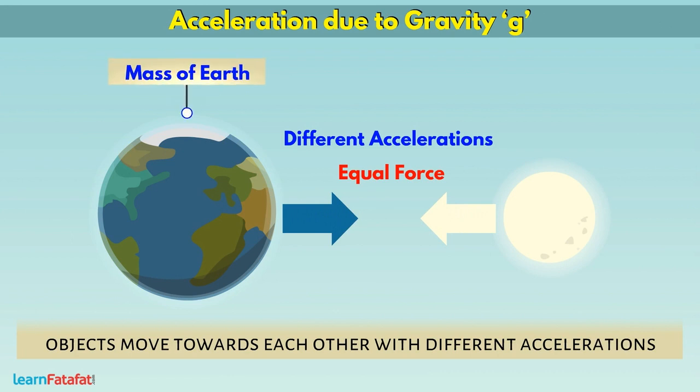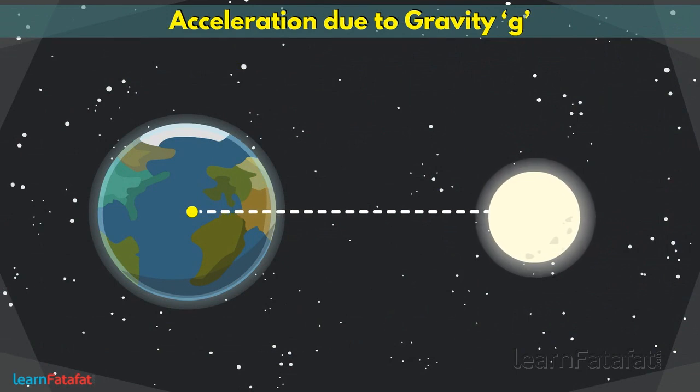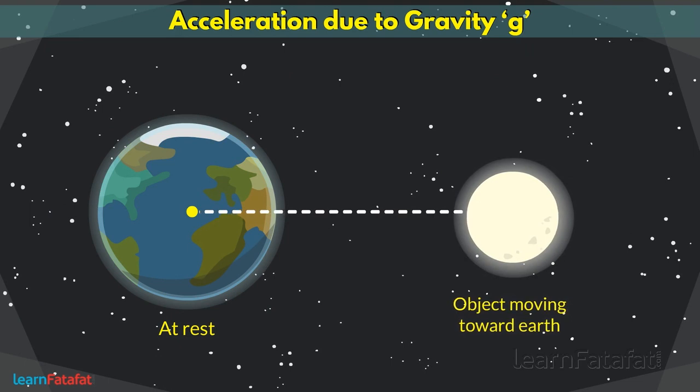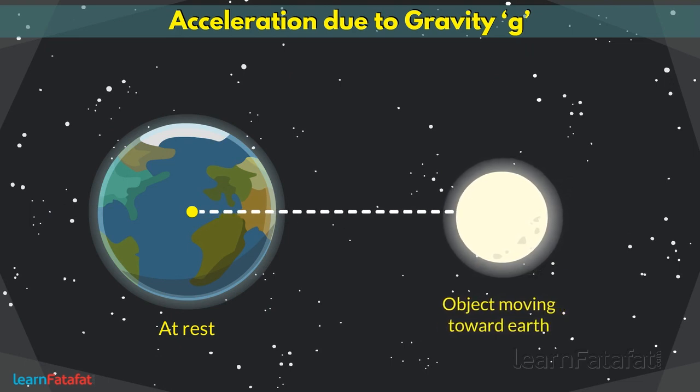Since the mass of Earth is very large, the gravitational force results in negligible acceleration in it. Thus, it appears that the Earth is at rest and the object is moving towards it. Here we introduce a new term in gravitation.